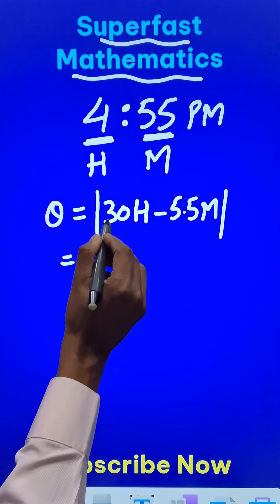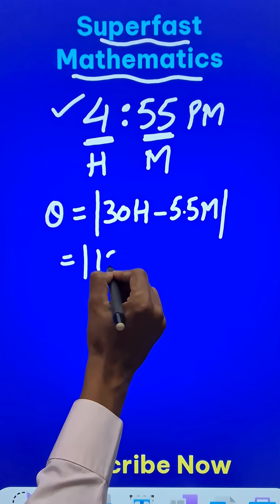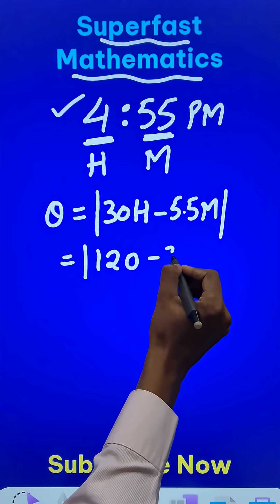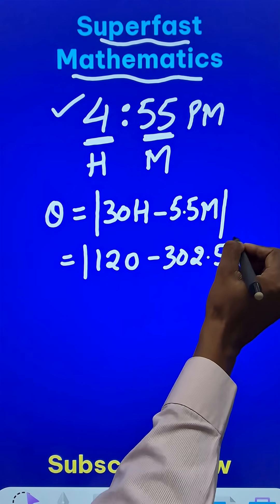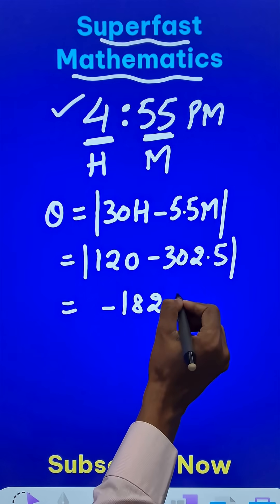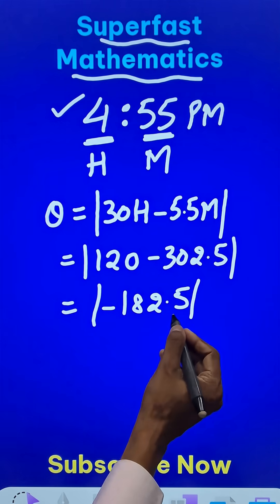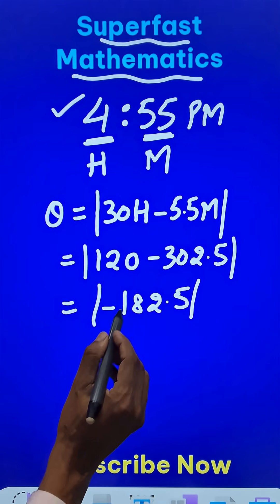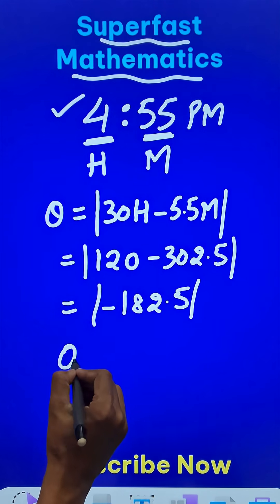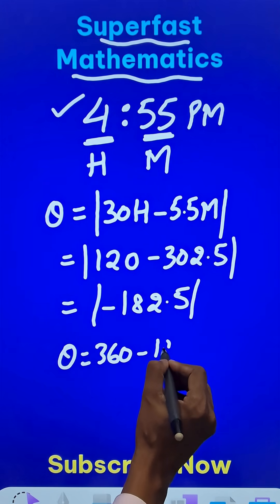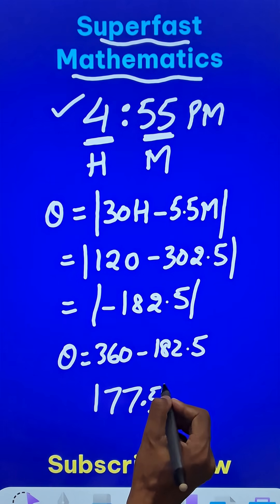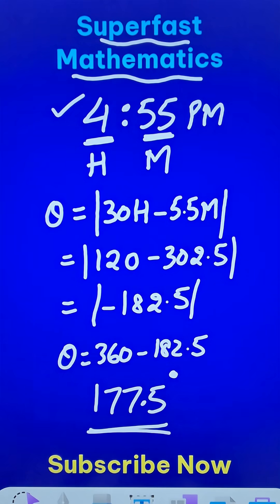Let's put the values in: 30 times 4 is 120, minus 5.5 times 55, which is 302.5. When you subtract them, you get -182.5. Now when the angle obtained is more than 180°, to find the smaller angle between the hour hand and the minute hand, you just do 360 minus 182.5, which gives you 177.5 degrees as the answer.